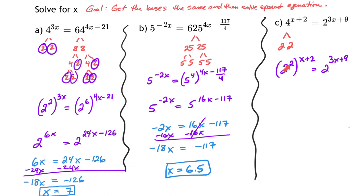I'll replace that with 2 squared, then take my power to a power. I'll multiply 2 times x and 2 times 2, which gives 2x plus 4. Now my bases are the same. I'll cross out the bases and focus on where 2x plus 4 equals 3x plus 9.